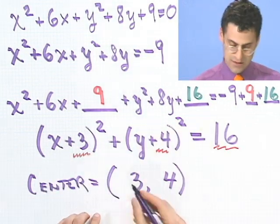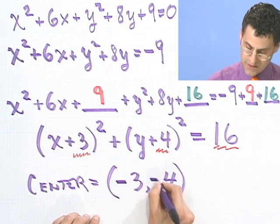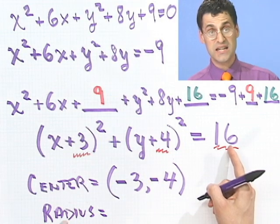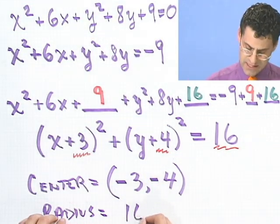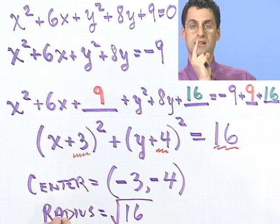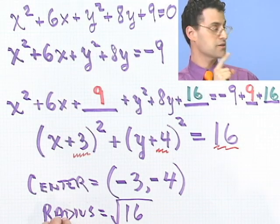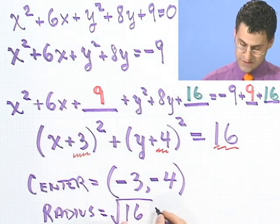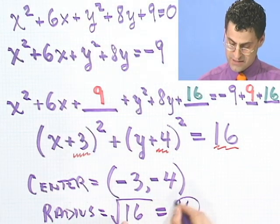The center is at minus 3 comma minus 4. So in fact, what I should say here is a minus 3 comma minus 4. And the radius? Well, the radius equals not 16. You may be tempted to say 16. But you have to take the square root of 16, because look at the formula over there. It's x minus h squared plus y minus k squared equals r squared. And so in fact, I have to take the square root, and I get 4.